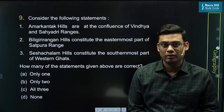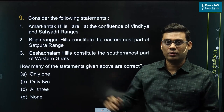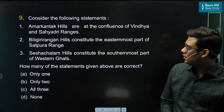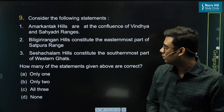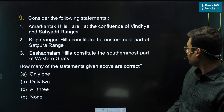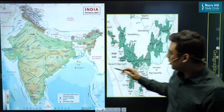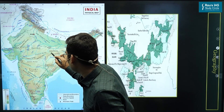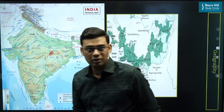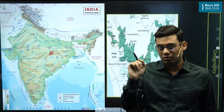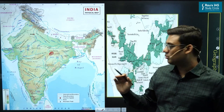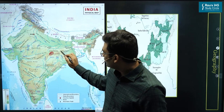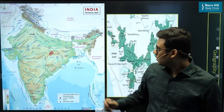Question number nine from geography, this is from physical geography of India — the hill ranges of India. First, Amarkandak hills are stated to be at the confluence of Vindhya and Sahyadri range. The Amarkandak plateau is the origin of two major rivers of India: Narmada, which flows towards the west, and Son, which flows towards the north meeting river Ganga.